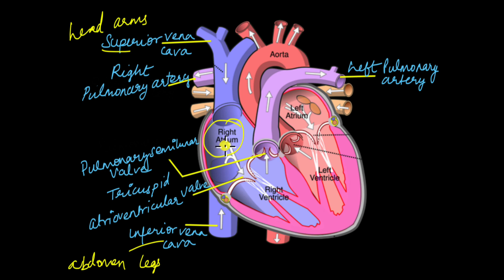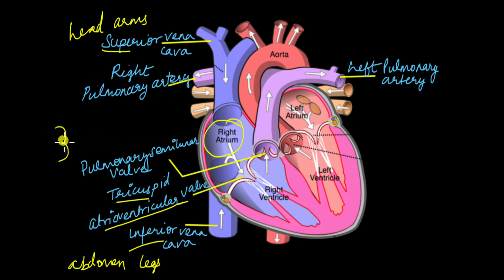From the right atrium, blood is pushed past a valve known as the tricuspid valve, or the atrioventricular valve — the tricuspid atrioventricular valve. It is called tricuspid because it is made up of three flaps, and atrioventricular (or AV) because it is located between the atrium and the ventricle. Past this tricuspid atrioventricular valve, blood moves into the right ventricle.